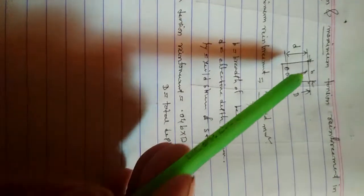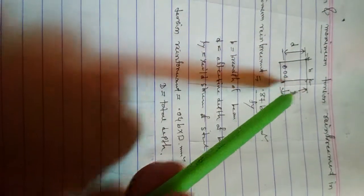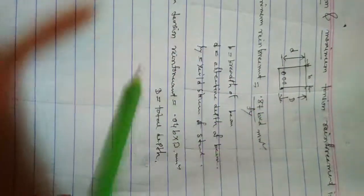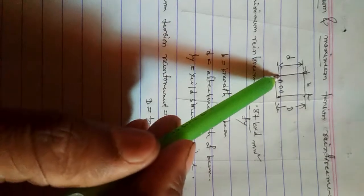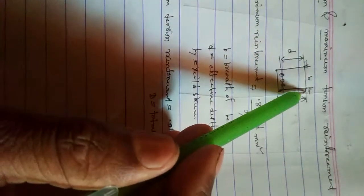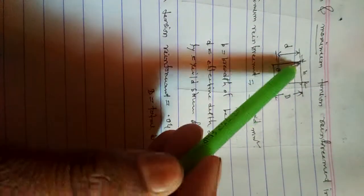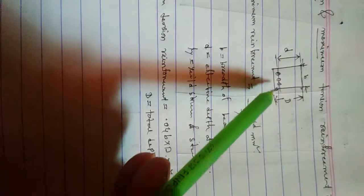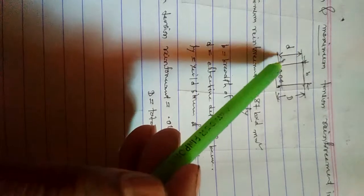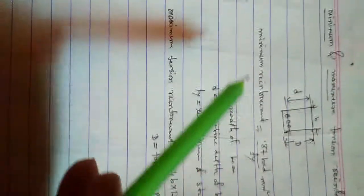Today I will discuss minimum and maximum tension reinforcement in a beam. This is a beam section where b is the width and overall depth is D and effective depth is d. The effective depth is the depth of the beam from the extreme compression fiber to the middle of the tension reinforcement.